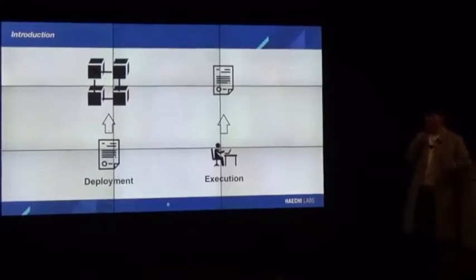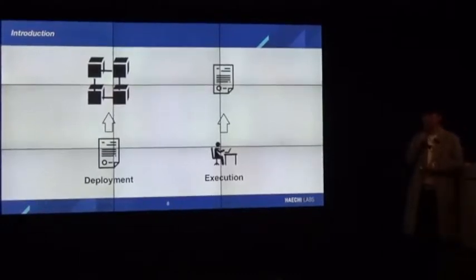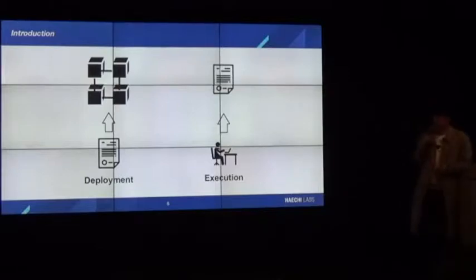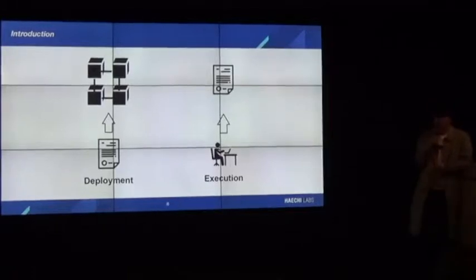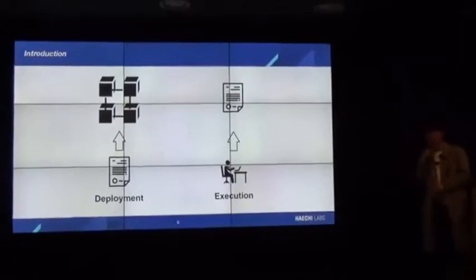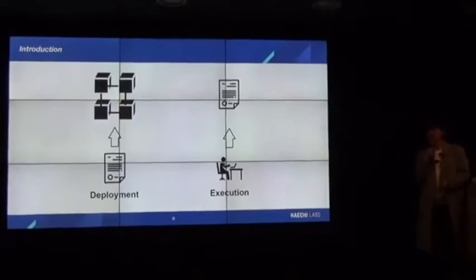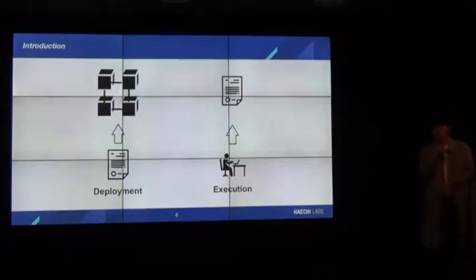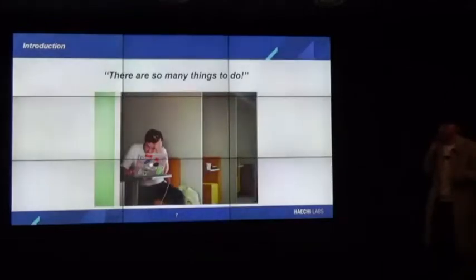We can divide it into four steps of developing smart contracts, which are development, testing, deployment, and execution. Today we are focusing on two phases, which are deployment and execution. If you are here, you have experience with developing smart contracts directly or indirectly. In my case, there is one sentence that every developer has in common: there are so many things to do.